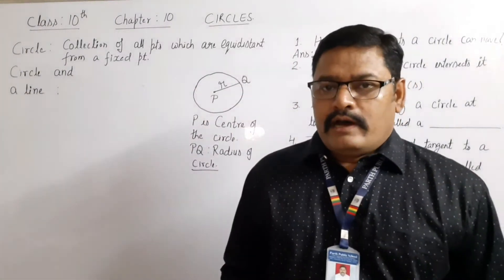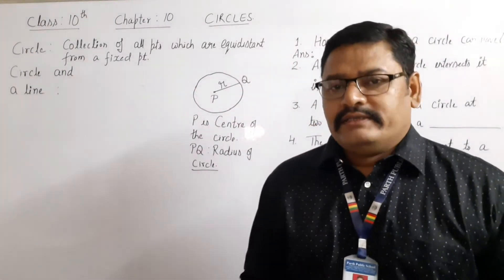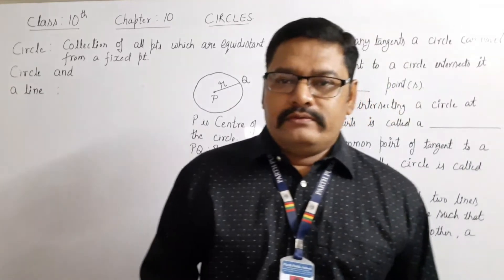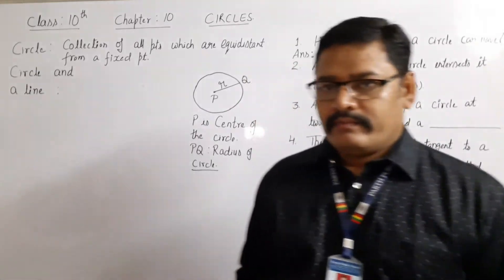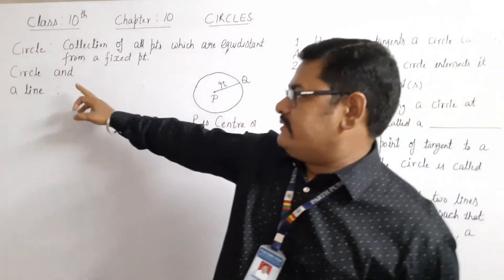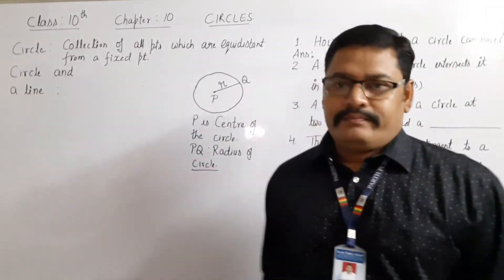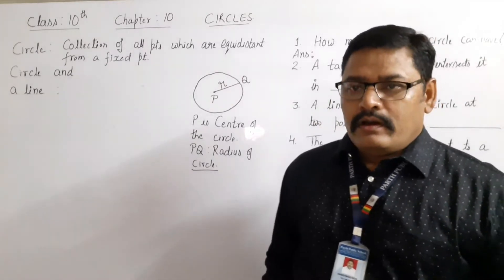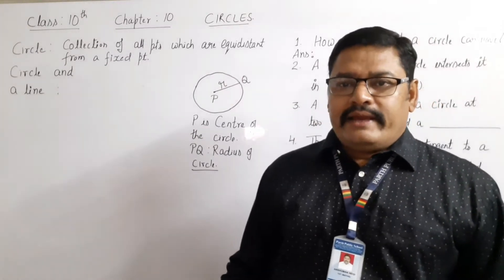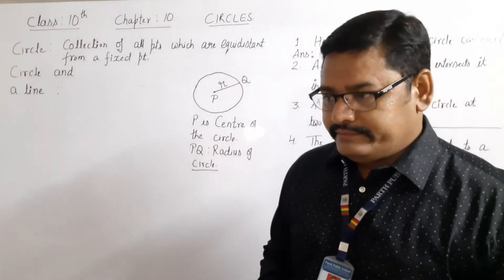Now we will extend the concepts of the circle. The first concept is the circle and a line — how a line and a circle are related.